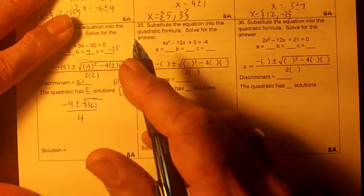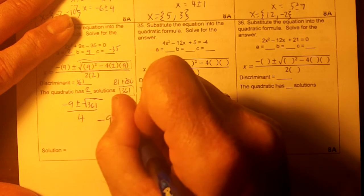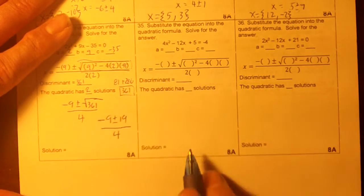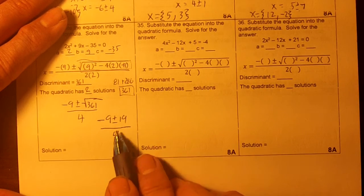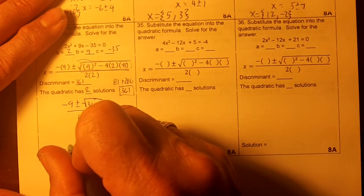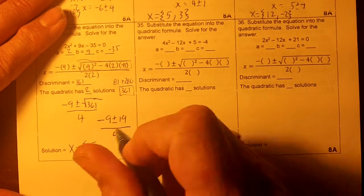The square root of 361 is 19. So I'm going to have negative 9 plus or minus 19 all over 4. So negative 9 plus 19 is 10. And 10 divided by 4 is 5 over 2. So x equals 5 over 2, comma.